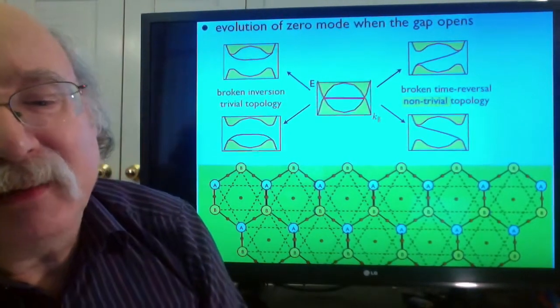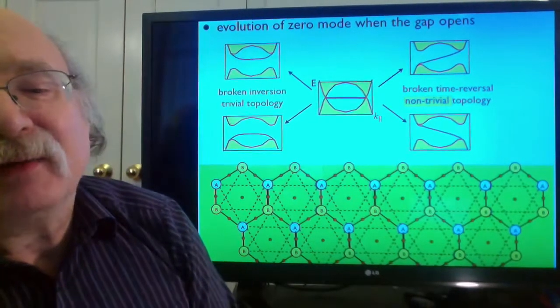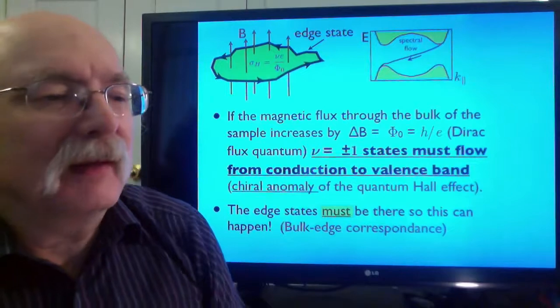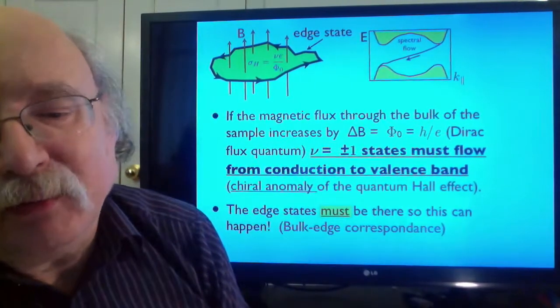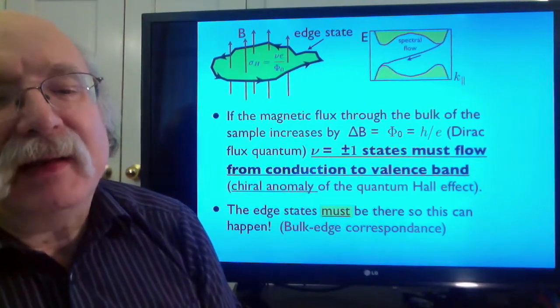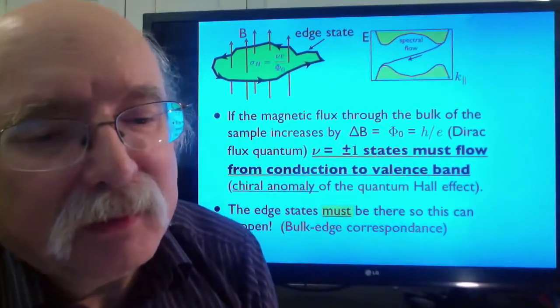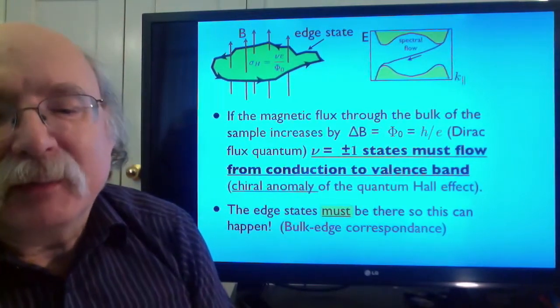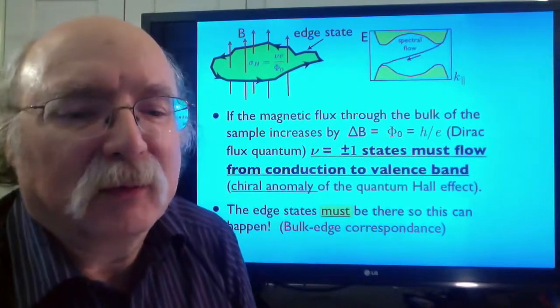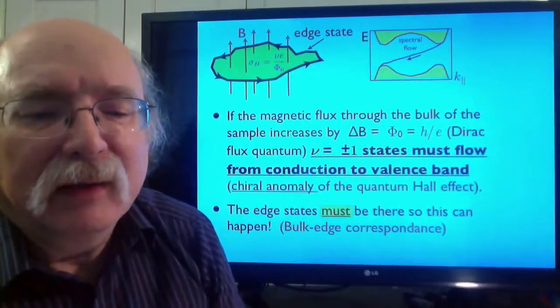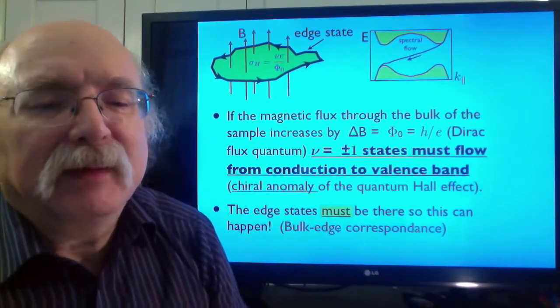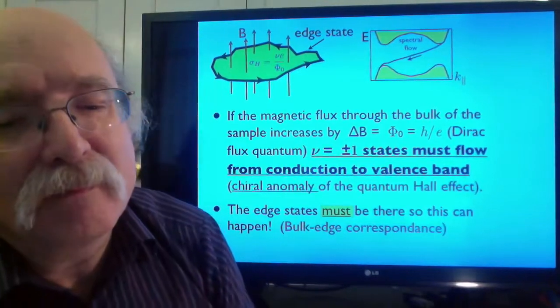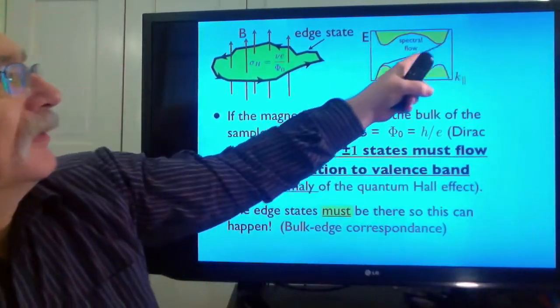This becomes a conduit that allows spectral flow of states between the conduction and valence bands. This is a fundamental property that's required by the chiral anomaly of the quantum Hall effect. If the magnetic flux through the bulk region here is increased by one Dirac flux quantum H over E, then one state must be transferred either from the conduction band to the valence band or from the valence band to the conduction band, depending on the sign of this quantum Hall effect. To make this transfer of states from conduction to valence band possible, the chiral edge state must exist and must propagate in one direction. So it gives you this conduit that allows the states to flow between the bands.